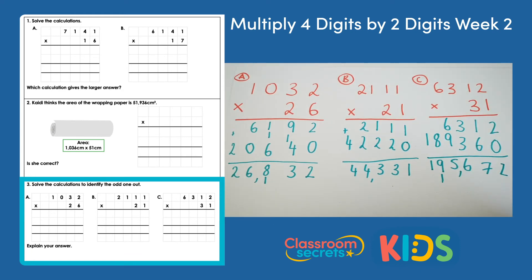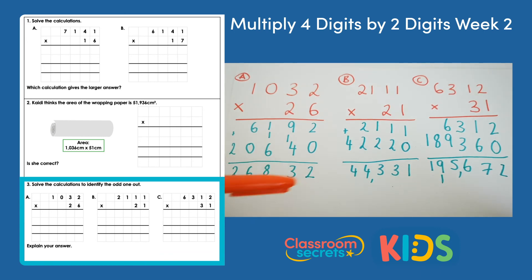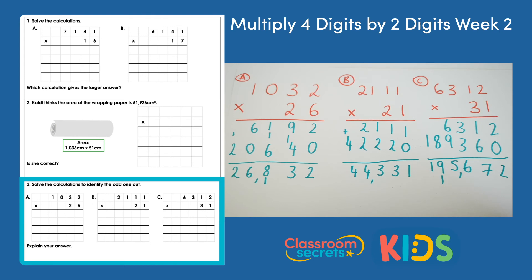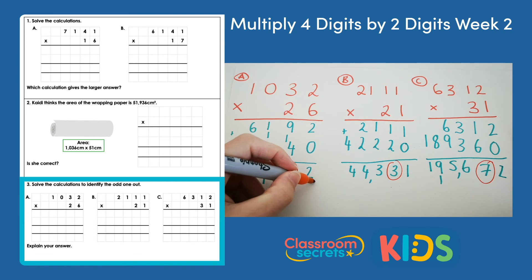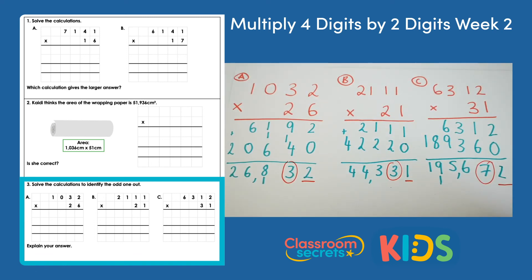We have a couple of different ideas for what could be the odd one out. The most obvious one is that C is the odd one out because C is the only answer that has six digits — A and B both have five-digit answers. However, we could also compare the numbers in each column. We could say C is the odd one out because it is the only number with a 7 in the tens column, whereas A and B have a 3 in the tens column. You could also argue that B is the odd one out because B is the only calculation with a 1 in the ones column, whereas A and C have a 2 in the ones column. Any of those answers are acceptable as long as you can explain why you think that.